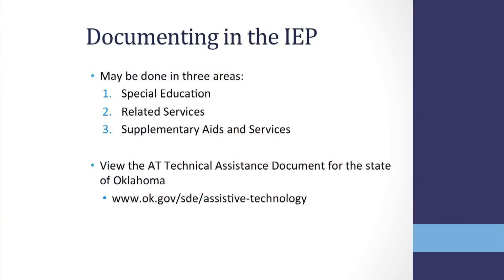Details of the needed AT should be included in the IEP, and there are three areas where this may be done: special education, related services, and or supplementary aids and services. Please see the Assistive Technology Technical Assistance document for the State of Oklahoma for specific examples on including AT in the IEP. This can be viewed on ABLE Tech's website or at the Oklahoma State Department of Education's website.